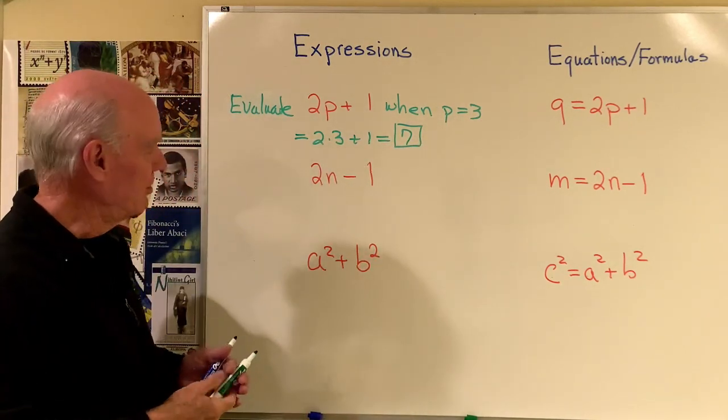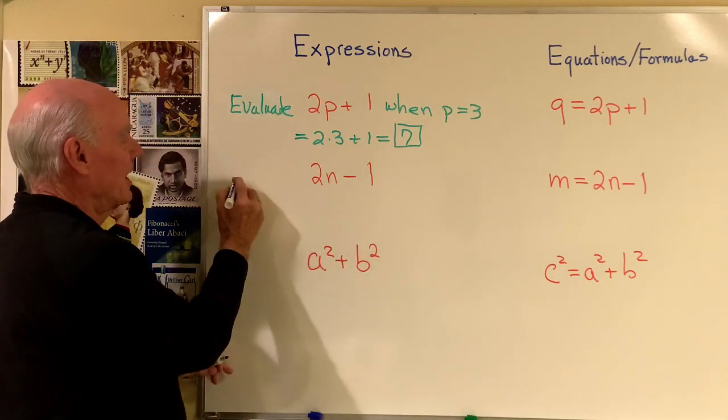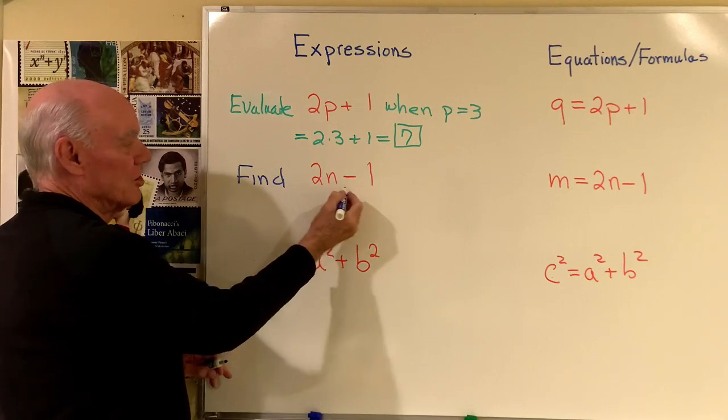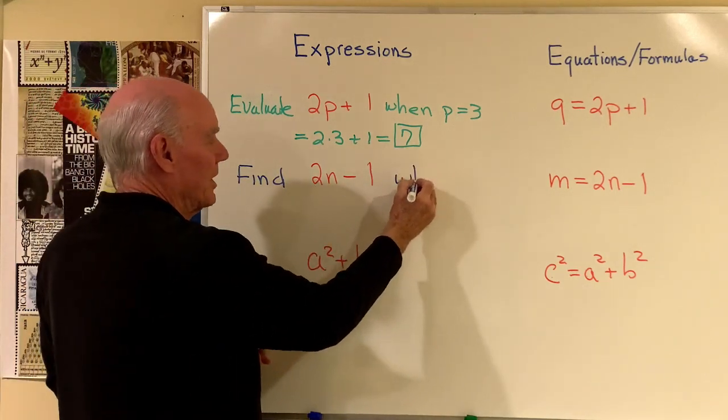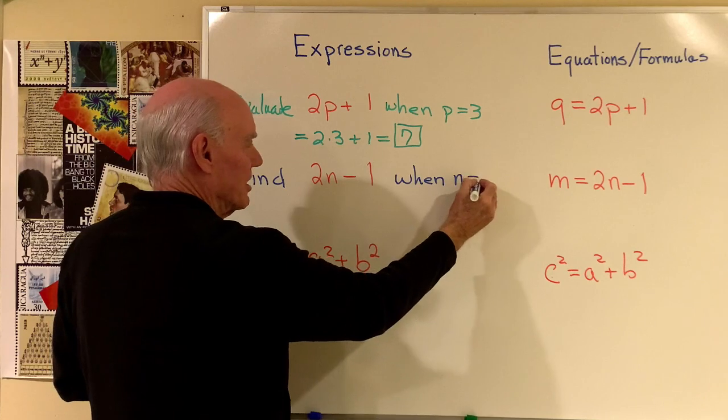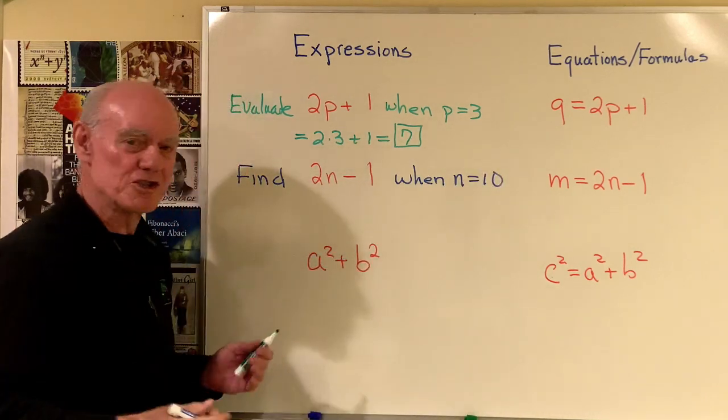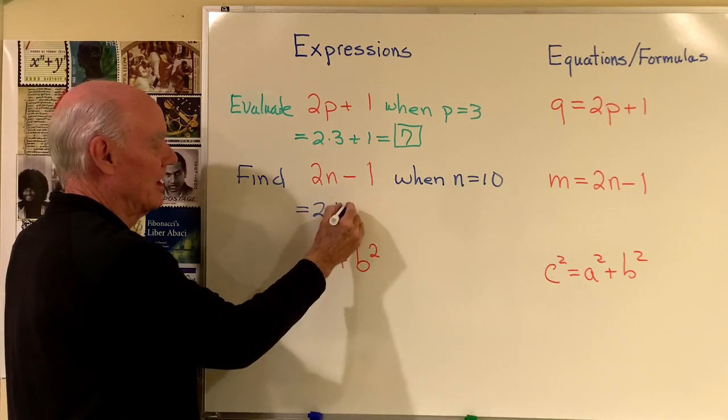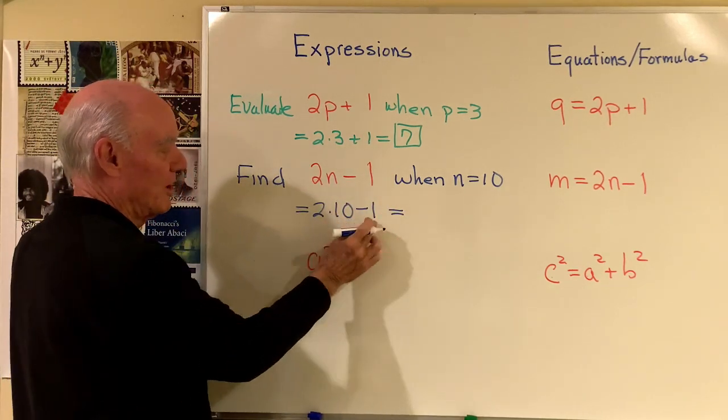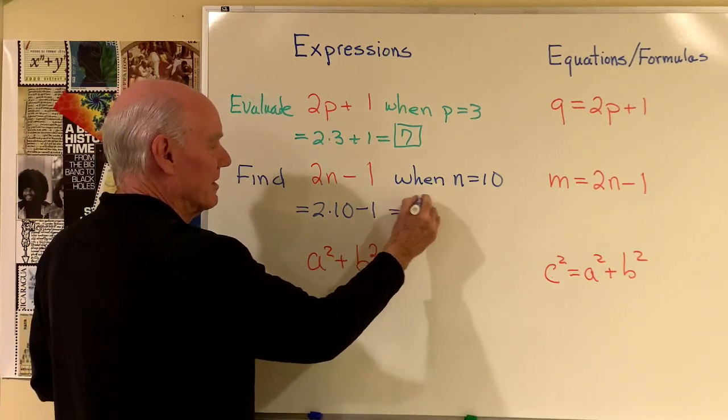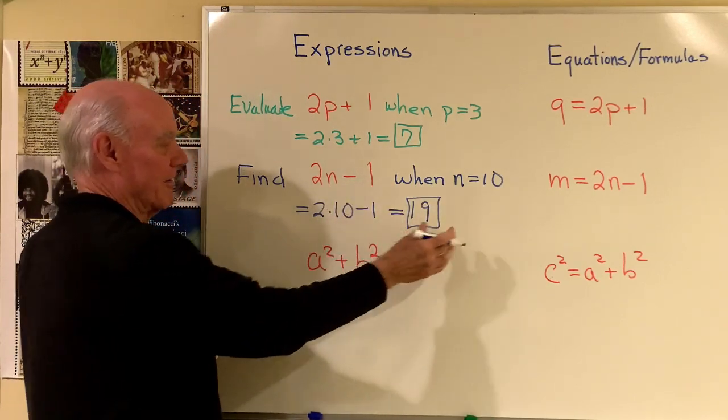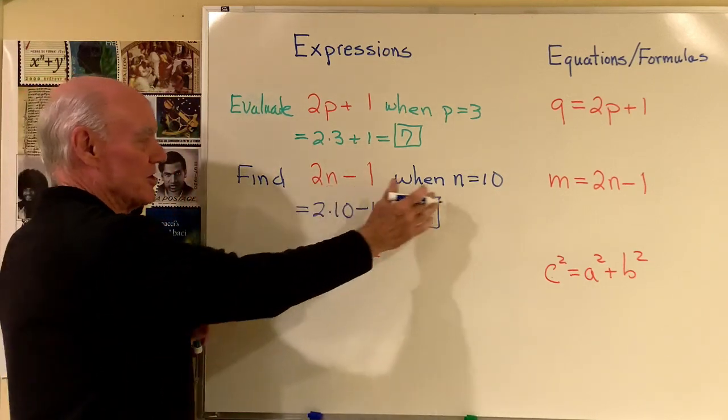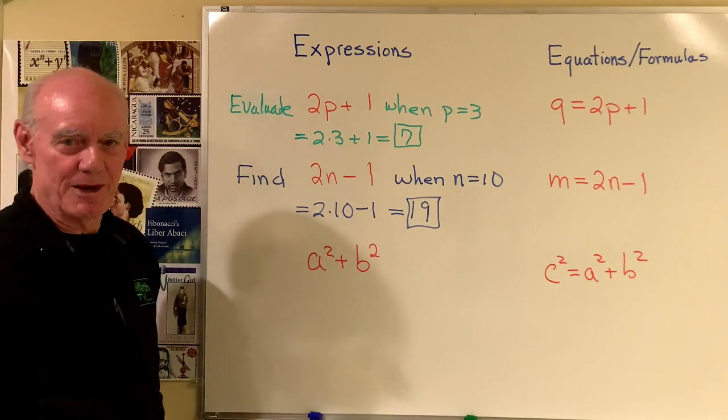Here's another expression right here, and I might say something like this. Let's say find 2n minus 1 when n is equal to 10. So a very similar type wording for this problem. And so this would be 2 times 10 minus 1, which is 20 minus 1, or 19. So this expression has a value of 19 when n is equal to 10.